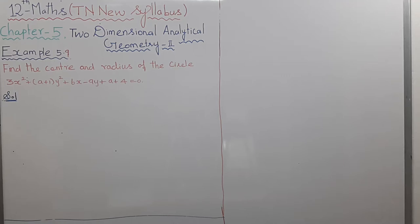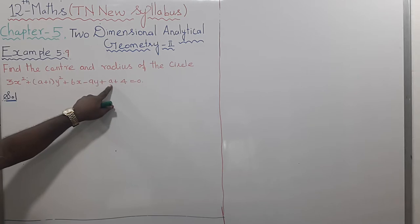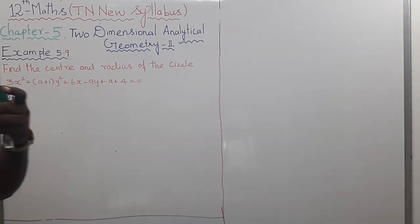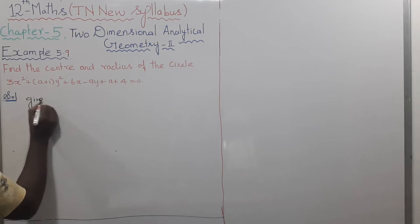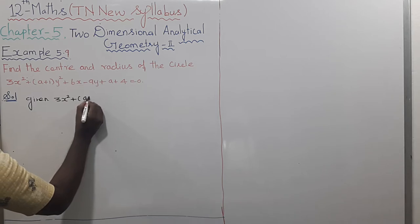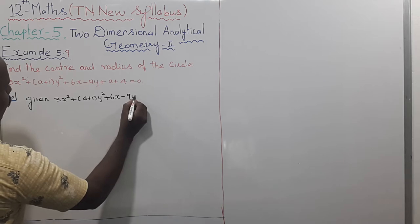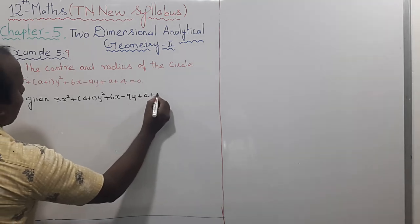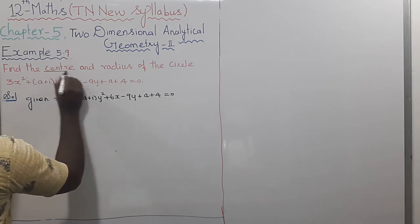Example 5.9: Find the center and radius of the circle 3x² + (a+1)y² + 6x - 9y + a + 4 = 0. Find out the center and radius.